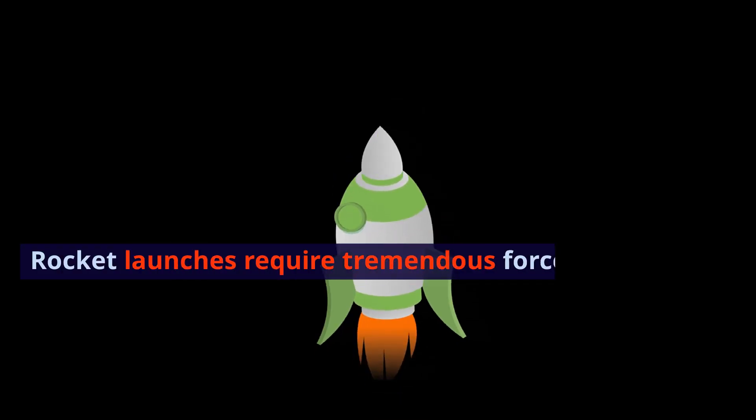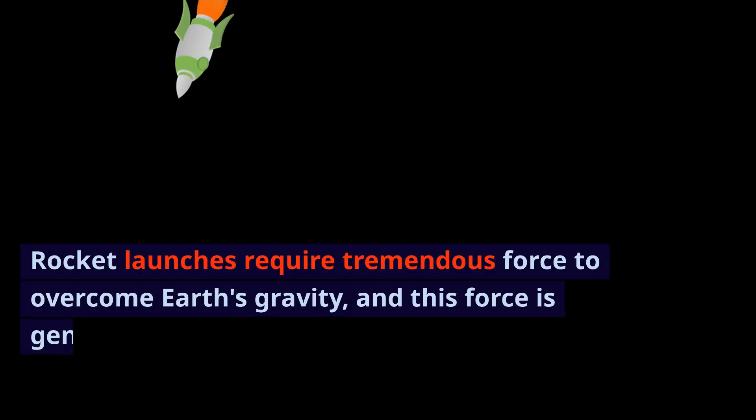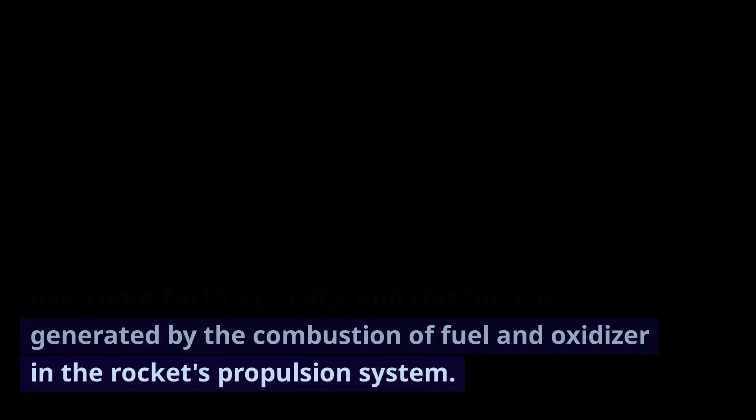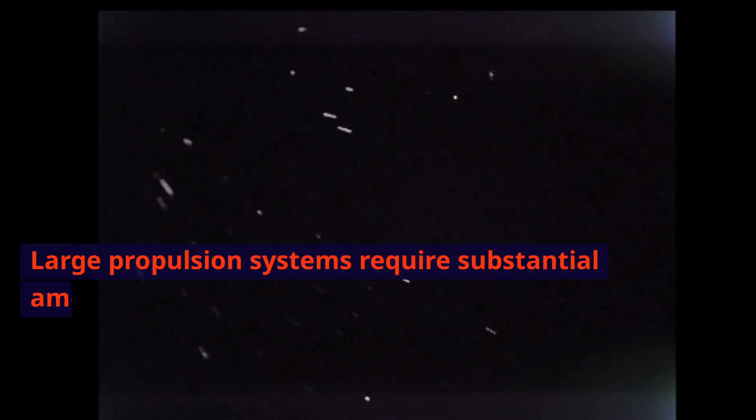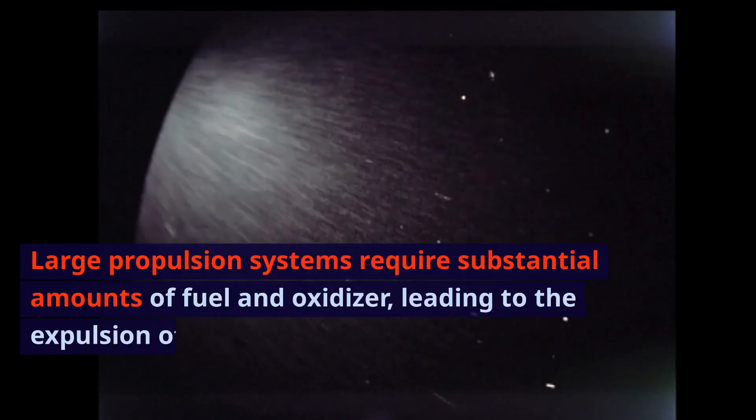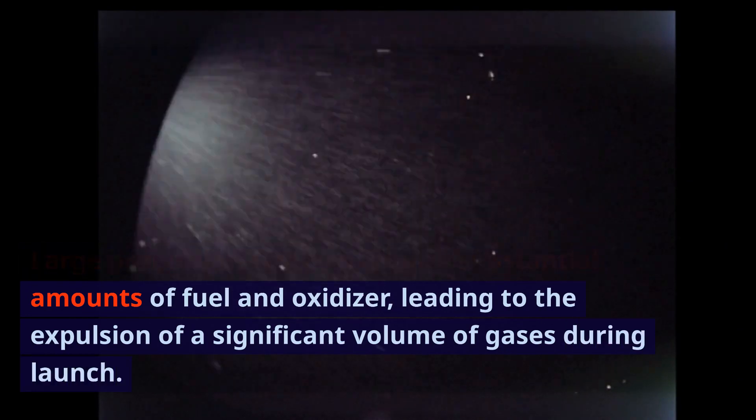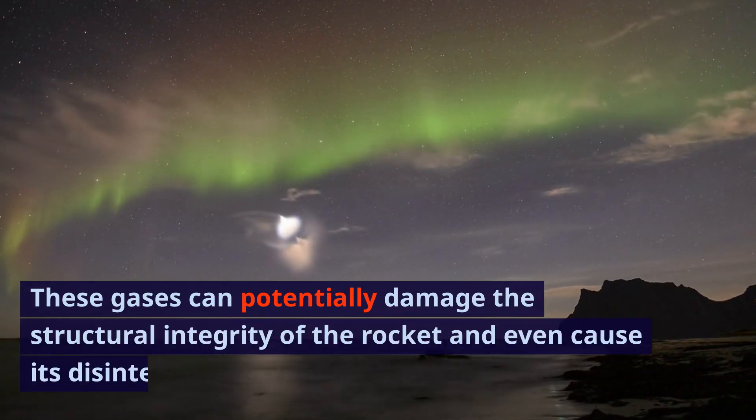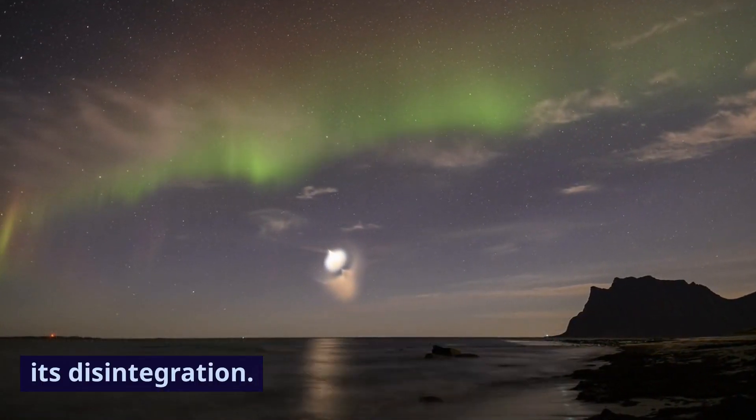Rocket launches require tremendous force to overcome Earth's gravity, and this force is generated by the combustion of fuel and oxidizer in the rocket's propulsion system. Large propulsion systems require substantial amounts of fuel and oxidizer, leading to the expulsion of a significant volume of gases during launch. These gases can potentially damage the structural integrity of the rocket and even cause its disintegration.